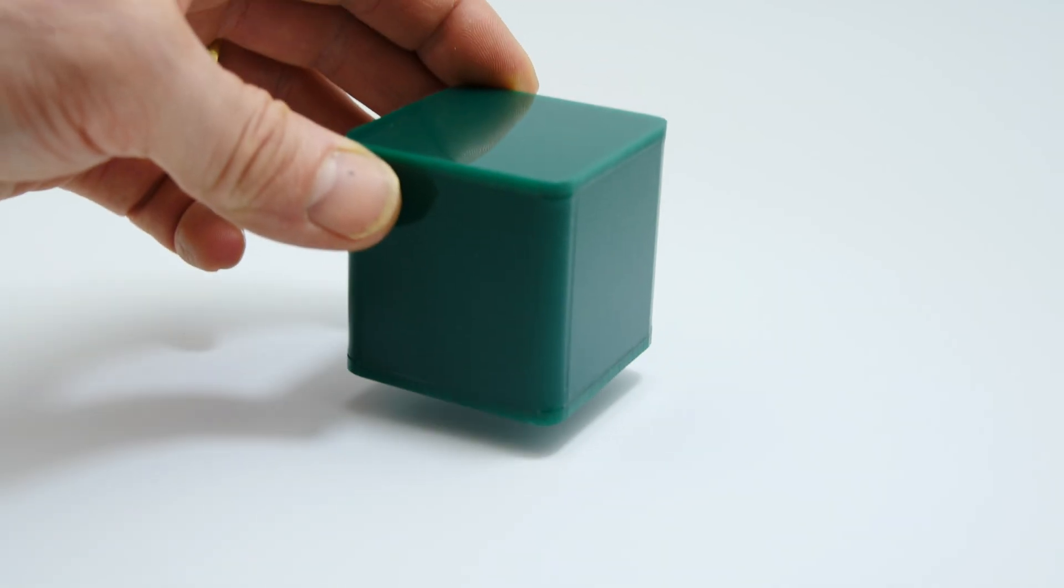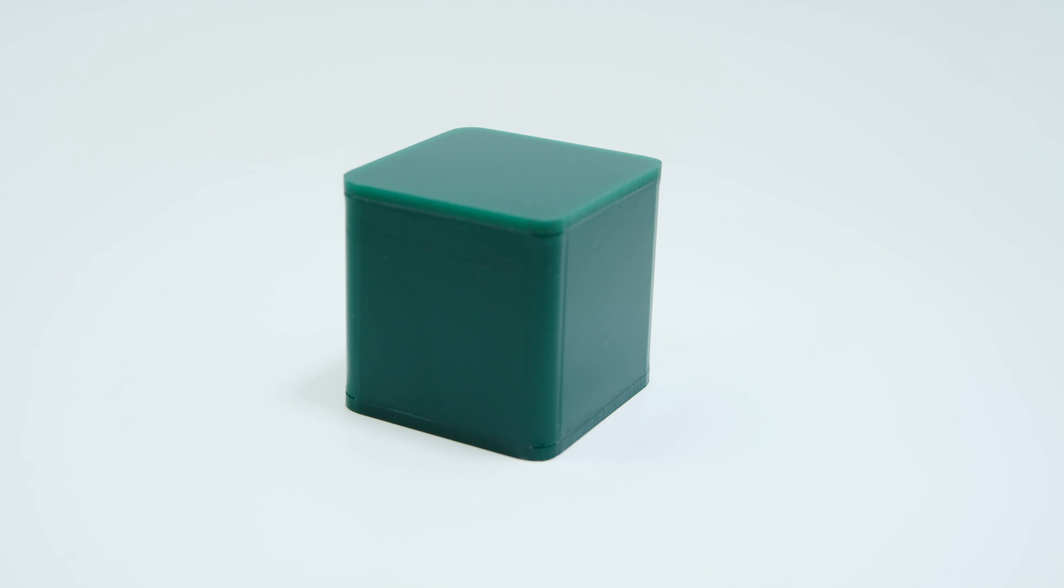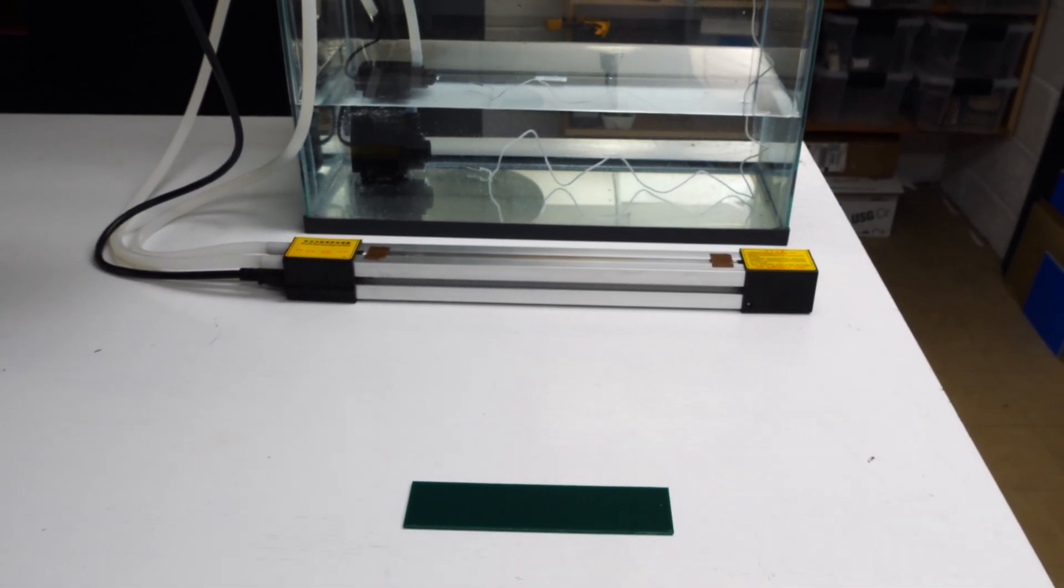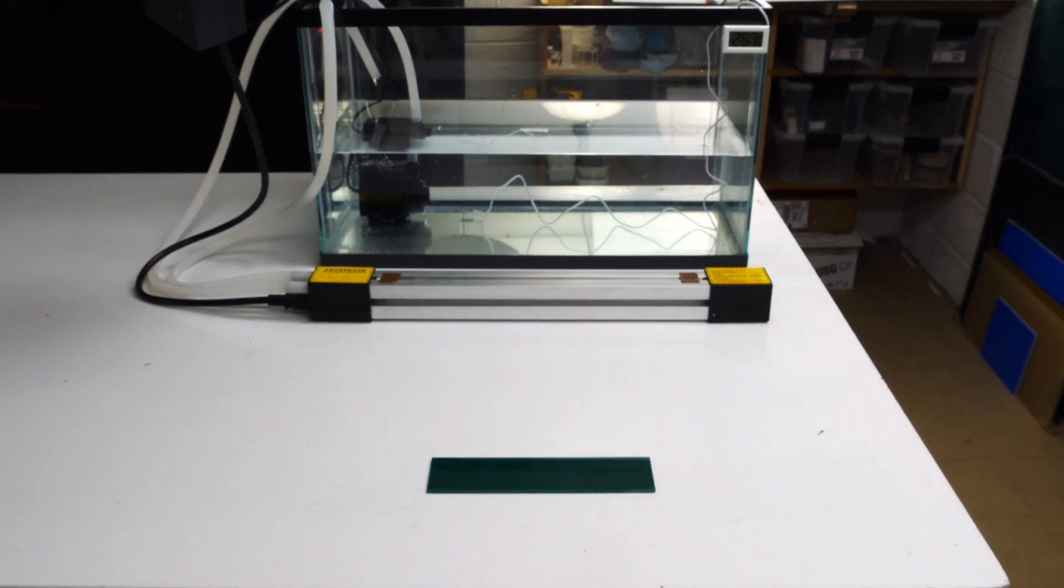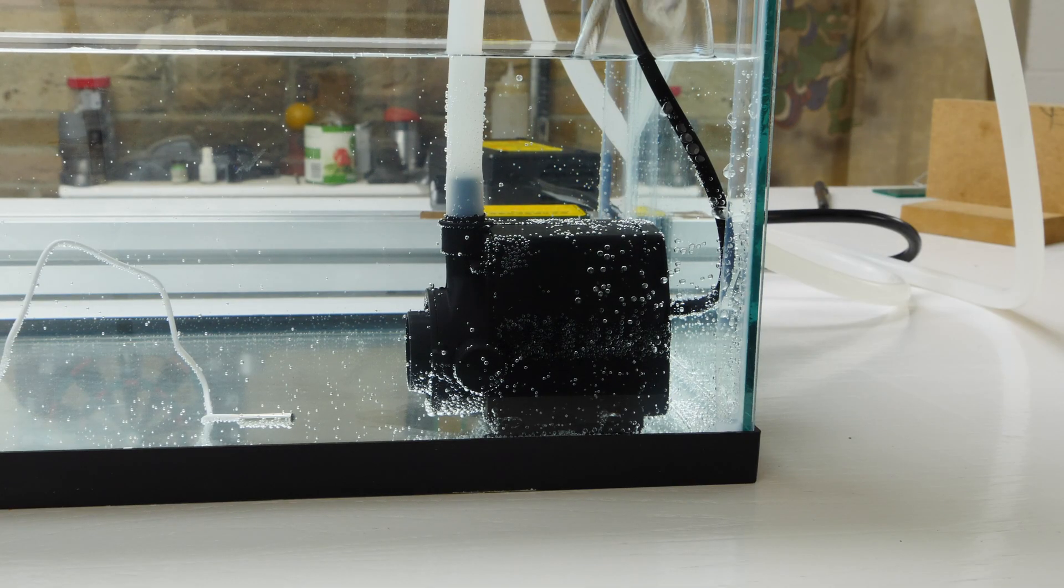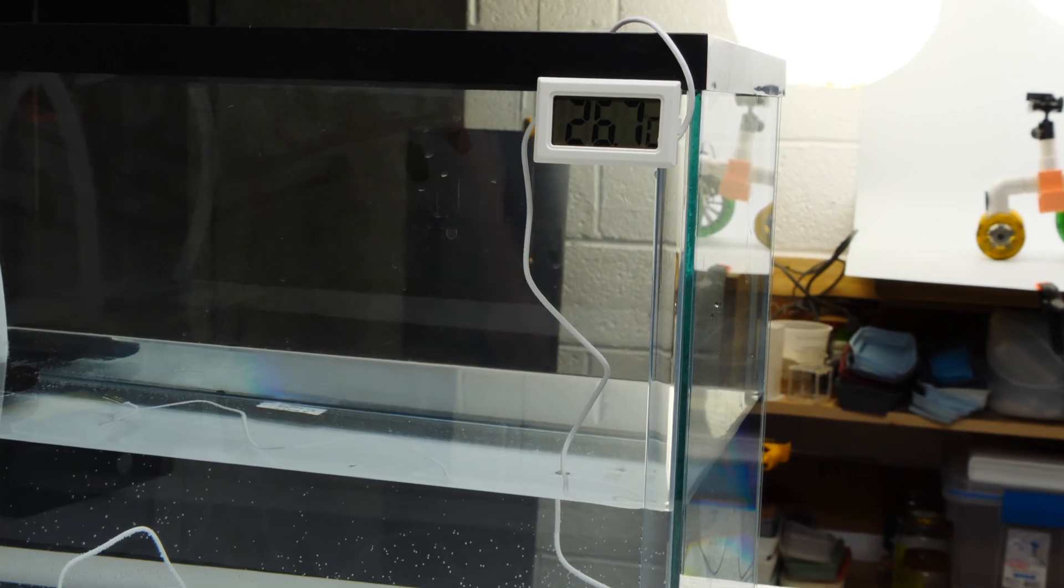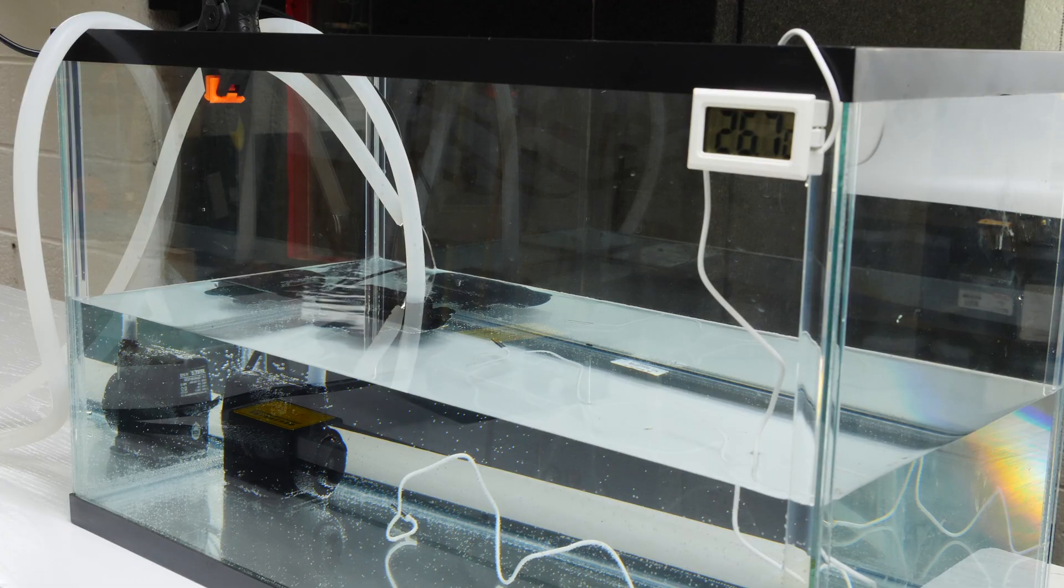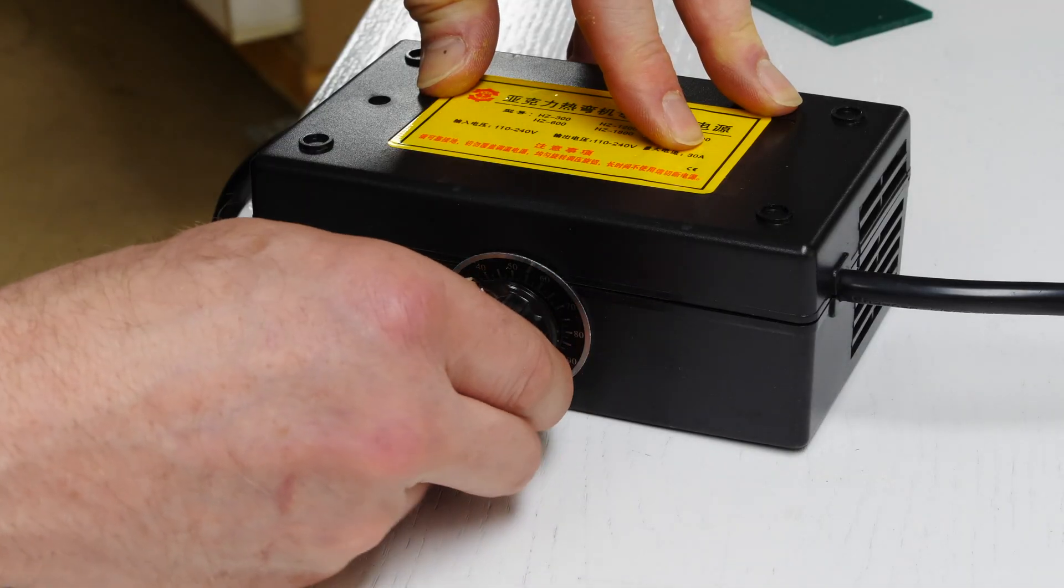We're going to use heat to bend this cube and have radius corners. And for that we're going to use a heat bender. This is my 12 inch water cooled heat bender, Amazon link in the description below. We're cycling water through an aquarium. It comes with a digital thermometer so you can keep tabs on the water temperature.